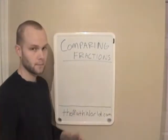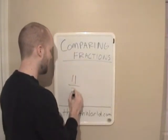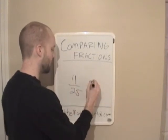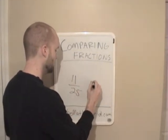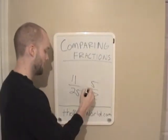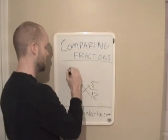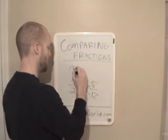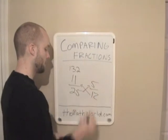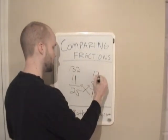And it works for however large a number you want to do it. So we can do 11 over 25, and we'll do 5-twelfths. And we're just going to multiply and multiply. 11 times 12 is 132, and 25 times 5 is 125.